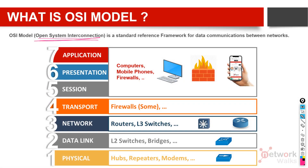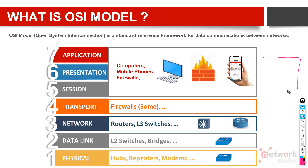The OSI model stands for Open System Interconnection. It is a standard reference framework used for data communication between networks and networking devices. It is just like a construction map — whenever you want to build your home, you draw it on paper first: this will be bedroom one, this will be bedroom two, this will be the kitchen.